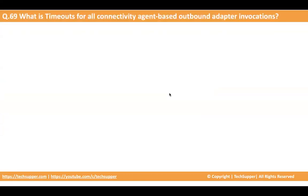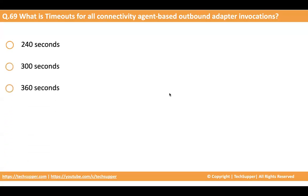The next question is: what is the timeout for all connectivity agent-based outbound adapter invocations — be it REST, SOAP, EBS, database, or any other adapter used with the connectivity agent for outbound invocation? The options are 240 seconds, 300 seconds, 360 seconds, and 180 seconds. When designing your integration using the agent, make sure it completes within the timeout, otherwise you will receive an error. The correct answer is 240 seconds, which is four minutes. If your invocation does not complete within four minutes, the integration will receive a timeout error.